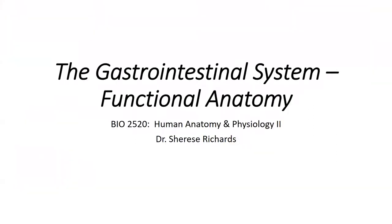We're going to start today by looking at the functional anatomy of the GI system. We'll talk about the different structures which constitute the GI from the mouth to the anus, and then we'll talk a little bit about the layers of the GI and some function.